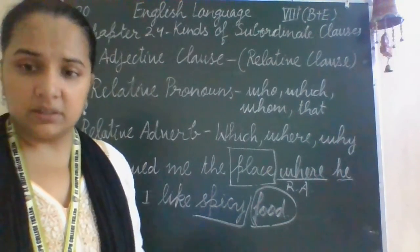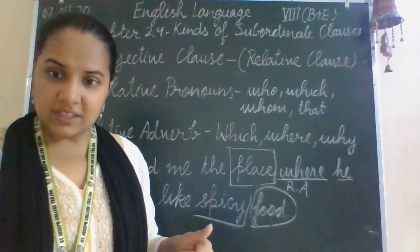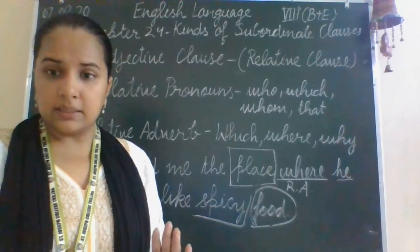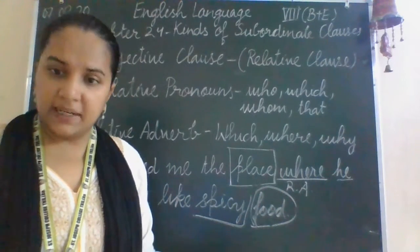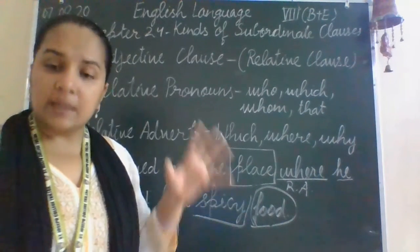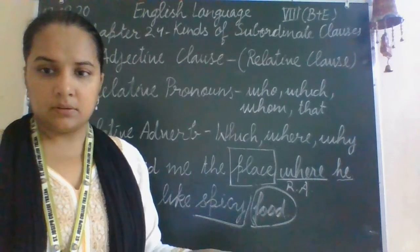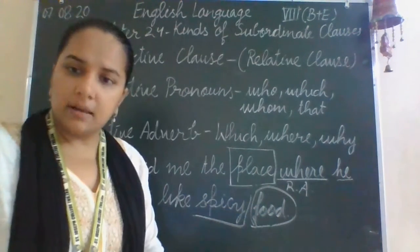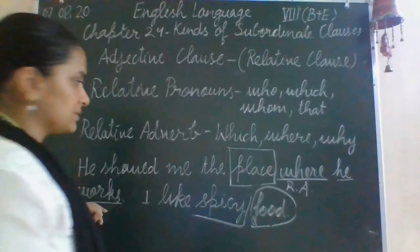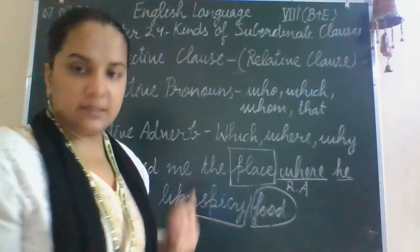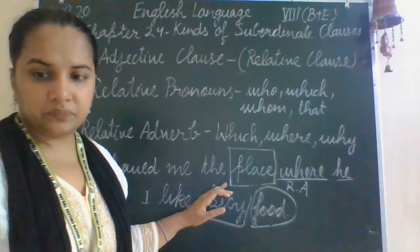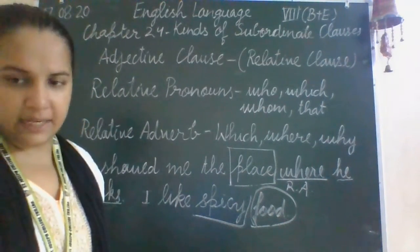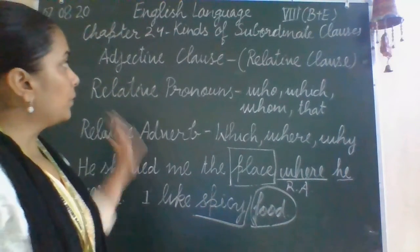When you have learnt about the clause, you know that whenever we use a clause, there is one main clause and one subordinate clause. The main clause is itself a complete sentence, while the subordinate clause is not complete without the main clause — the subordinate clause needs a main clause. So 'he showed me the place' is the main clause, and 'where he works' is the subordinate adjective clause, incomplete on its own, and it tells about the quality of the place.